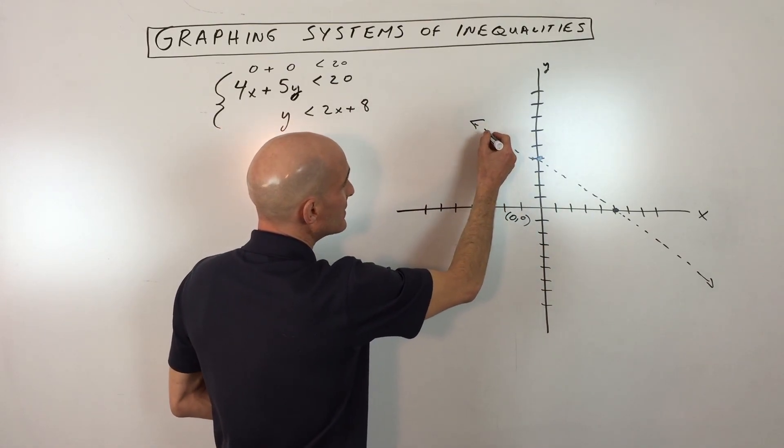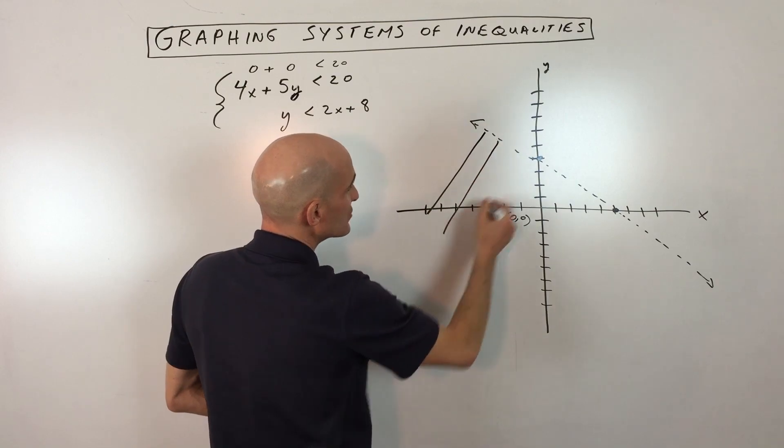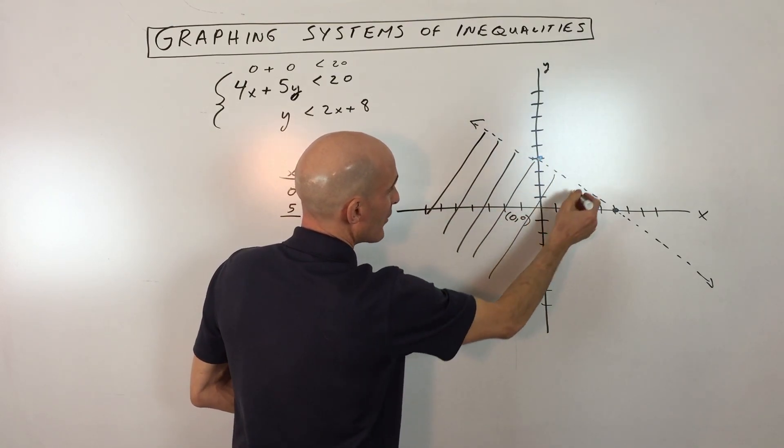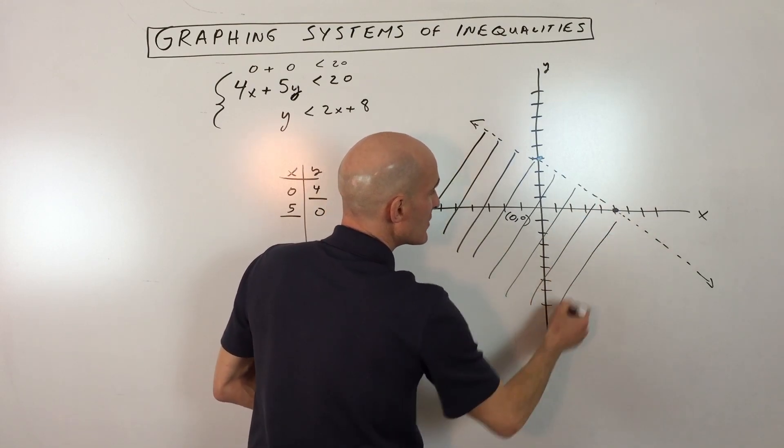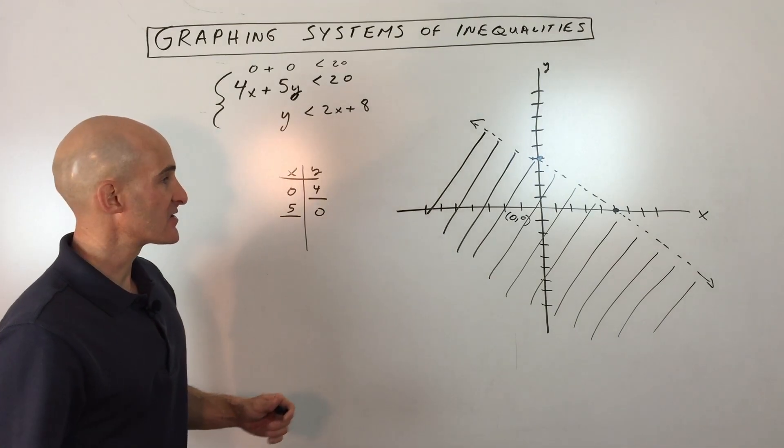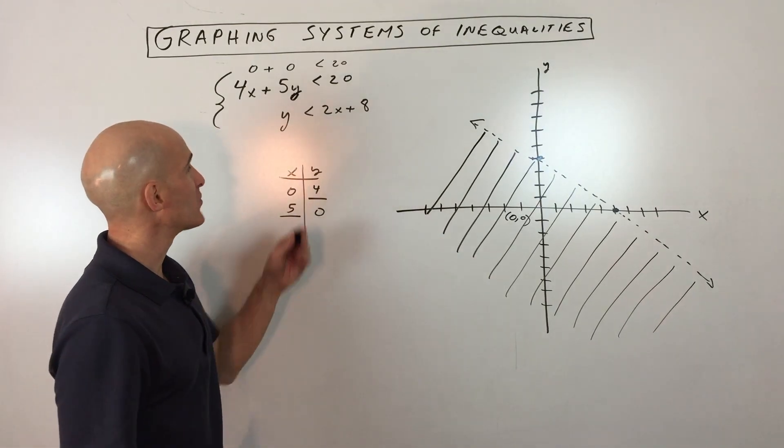When I shade, I like to draw the shading lines perpendicular to the line. See how these are at right angles? And it'll make it a little bit easier to find the overlapping region.